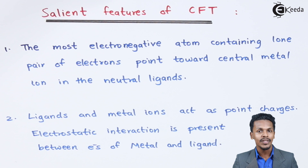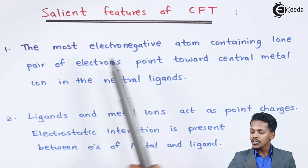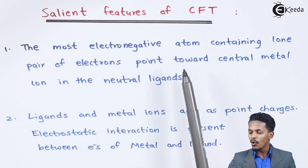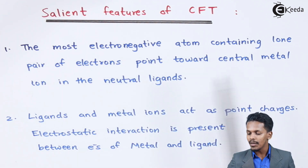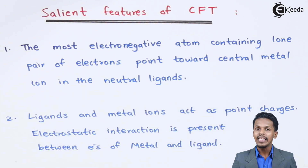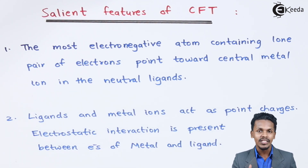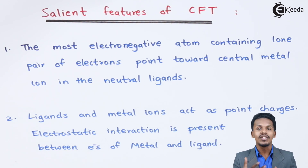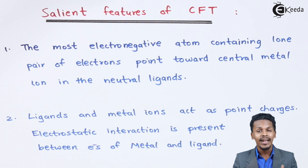The first feature is that the most electronegative atom containing a lone pair of electrons points towards the central metal ion in neutral ligands. There are different classifications of ligands — monodentate ligands and bidentate ligands.